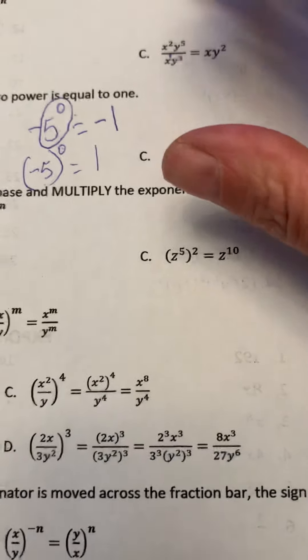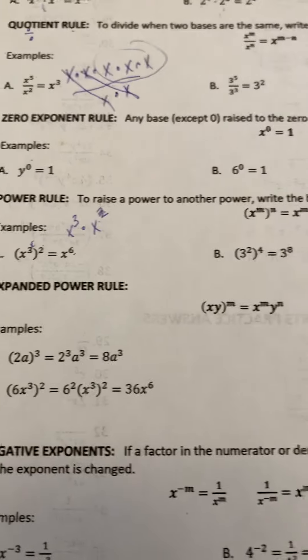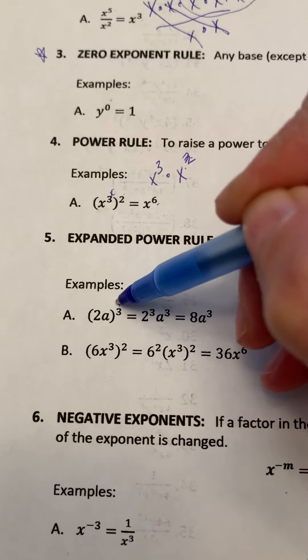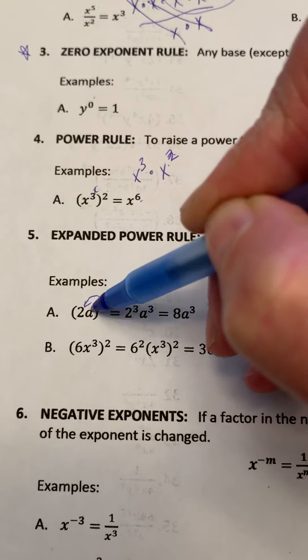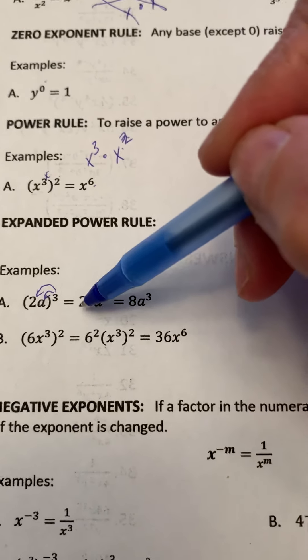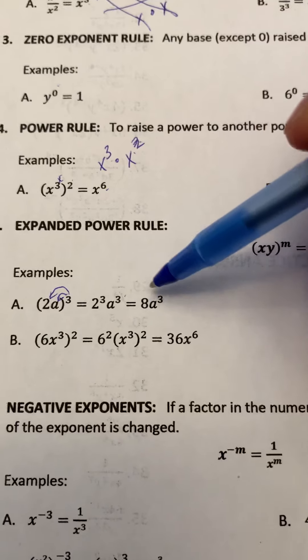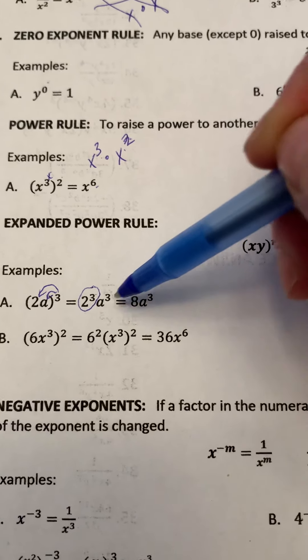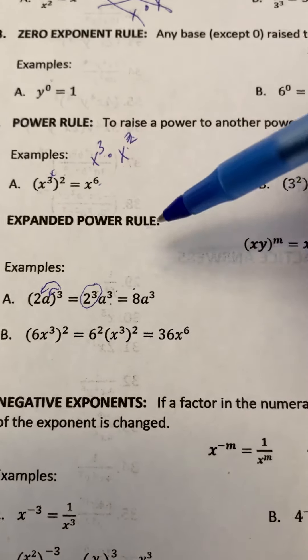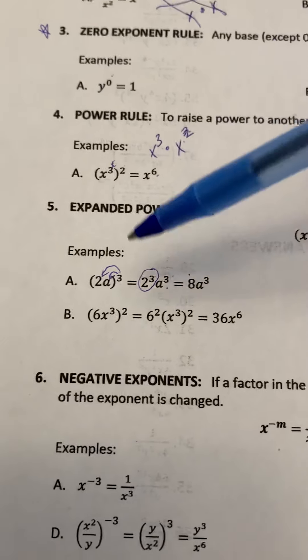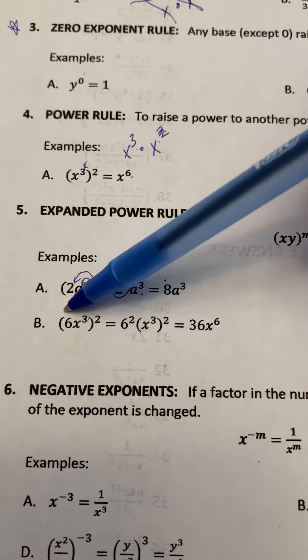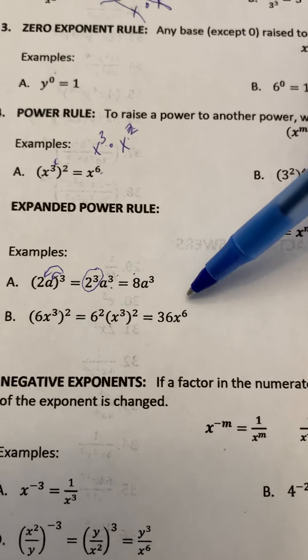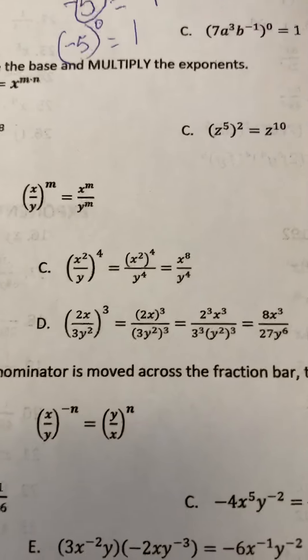So expanded power rule. This is important that you understand that this cube goes to this 2 and it also goes to the a. So we end up with 2 cubed a cubed, which is—now we can do this because we know what 2 cubed is, it is 8. We can't do anything with the a because that's an unknown, it's a variable that we don't know. So this one here: 6 squared and then x cubed squared, so we end up with 36x to the power of 6.